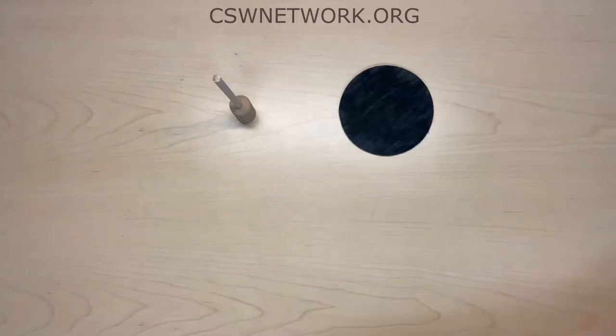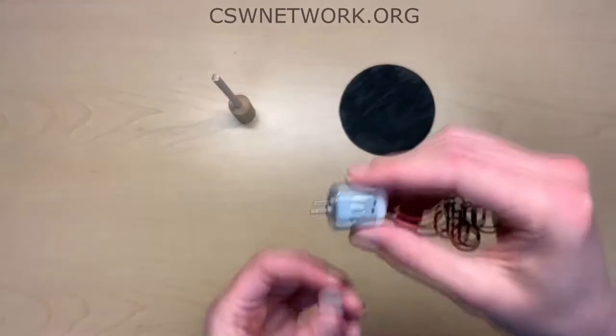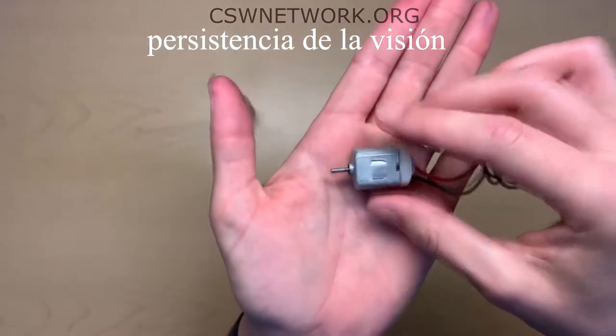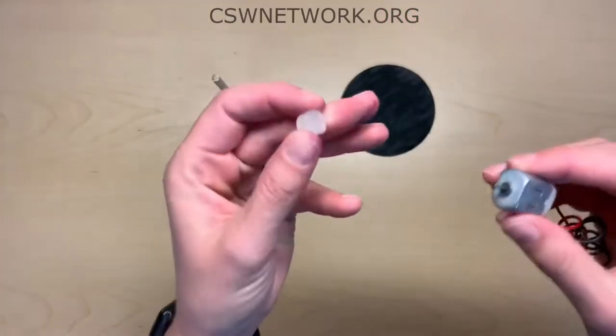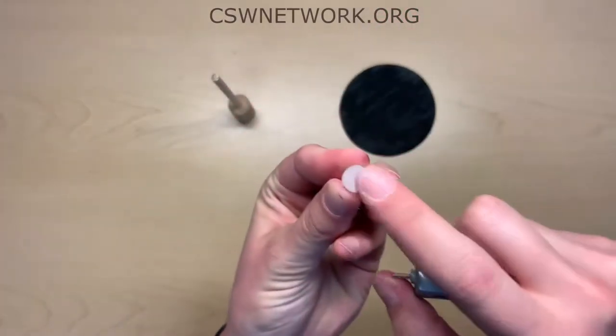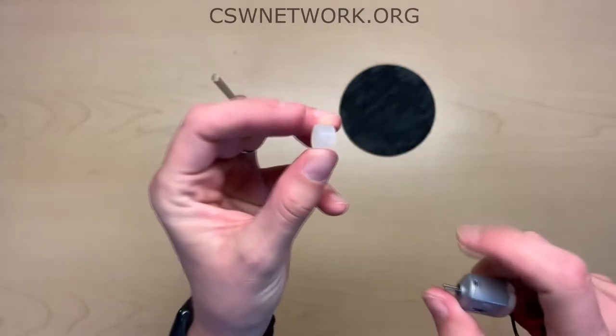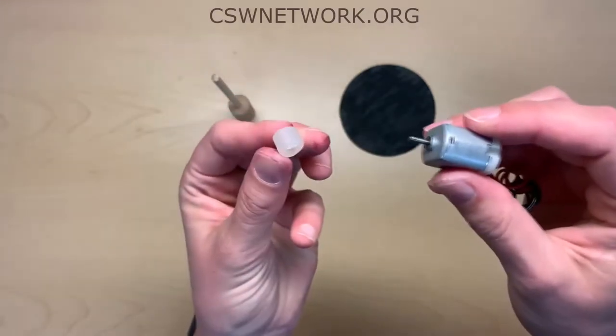Como la imagen brillante está parpadeando 72 veces cada segundo, no notamos los puntos de obscuridad entre cada imagen. Es por eso que nuestros cerebros lo perciben como un movimiento normal. Esto es un tipo de ilusión óptica llamada persistencia de la visión.